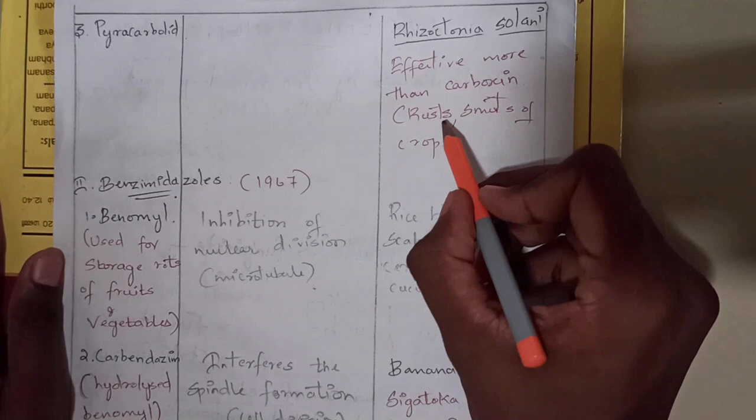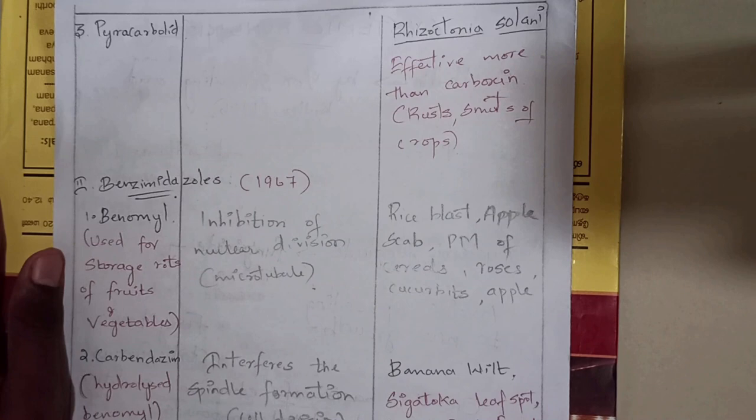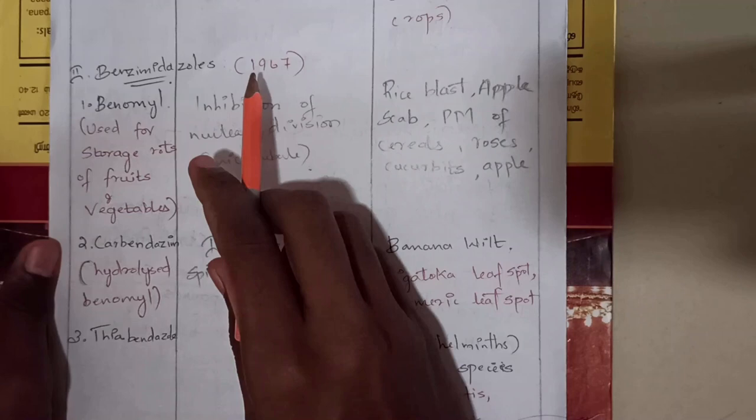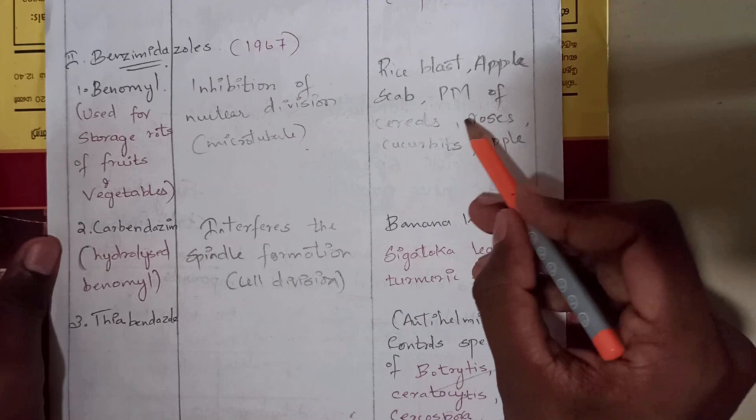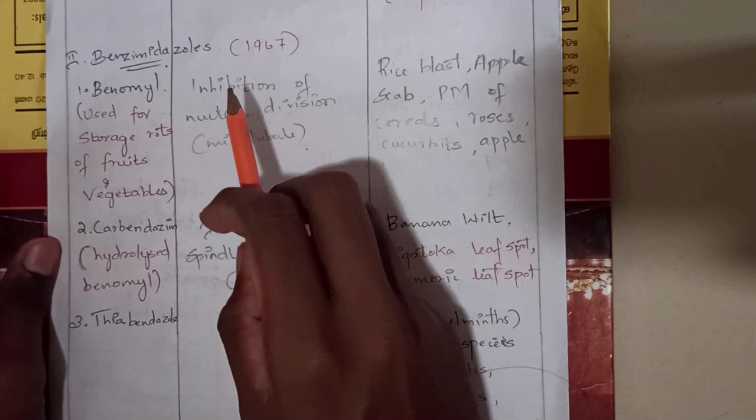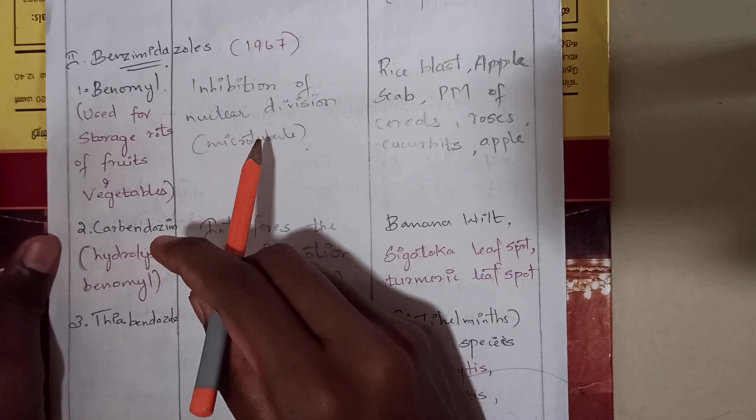The second group is benzimidazole, discovered in 1967. The first compound is benomyl, used against rice blast, apple scab caused by Venturia inequalis, and powdery mildew of cereals, roses, cucurbits, and apples. Its mode of action inhibits nuclear division; benomyl is mainly used for storage rots of fruits and vegetables.